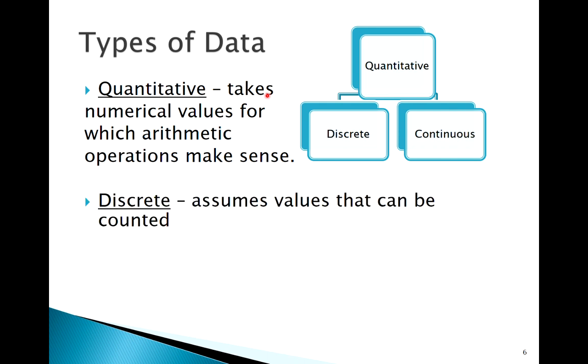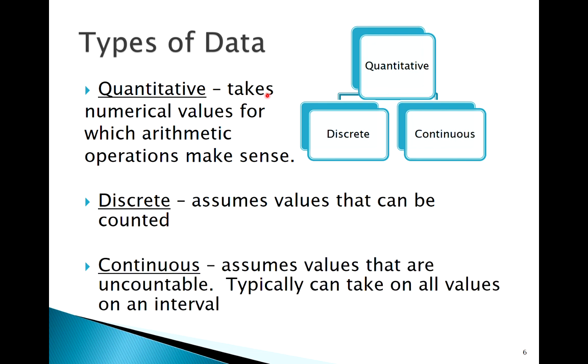We can further break down quantitative data into discrete and continuous data. Discrete versus continuous is all about countability. Discrete data is countable. Continuous data is uncountable - it's typically infinite, usually defined on intervals. The big thing I've got to think about: discrete versus continuous - is it countable?